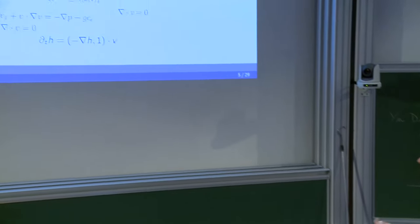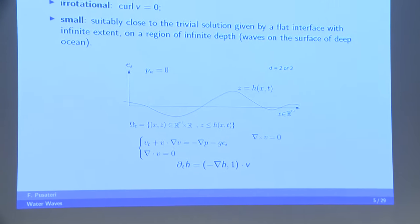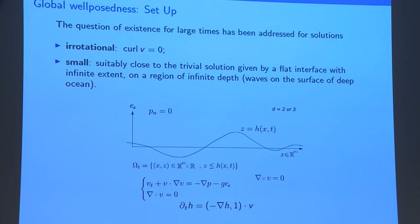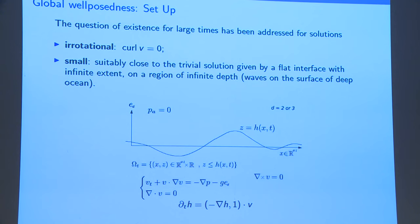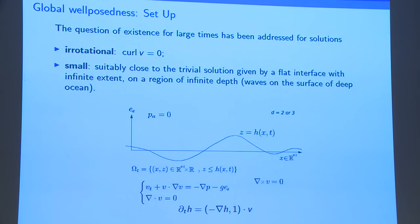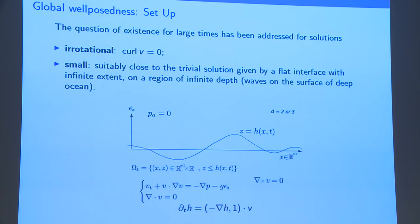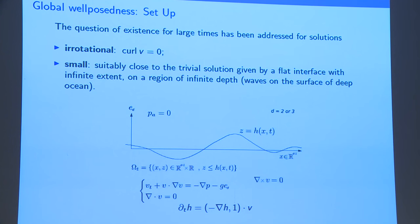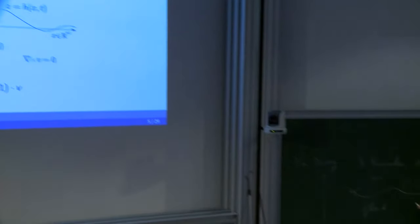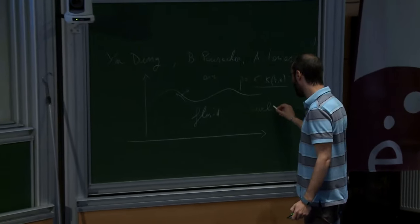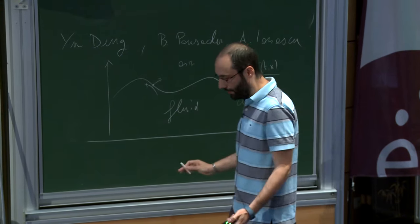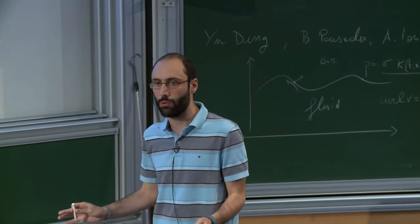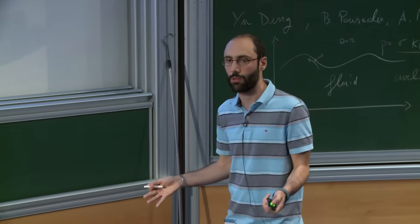Now the third question — and the one I'm most interested in — is the question of long-time or global well-posedness. The setup is the following. First, you want to assume that the fluid is irrotational: you have Euler's equations and you add that the curl of v is zero. In three dimensions, this is obvious — otherwise you'd be facing Euler equations in 3D, which would be harder.